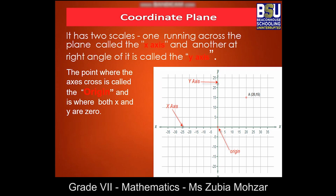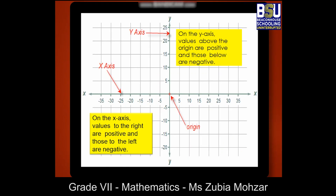Look at this coordinate plane. You can see it has two scales: one running across the plane called the x-axis, and another at a right angle to it called the y-axis. The point where the axes cross is called the origin. On the x-axis, values to the right are positive and those to the left are negative.